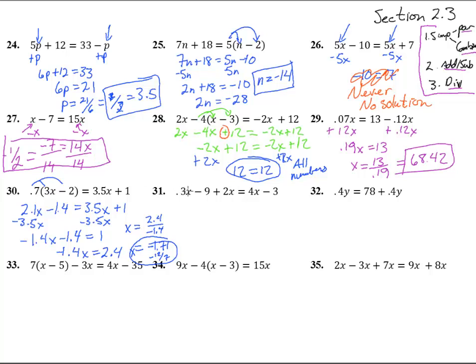Number 31. No parentheses to get rid of, so we just need to worry about combining them together. On this side we have a 0.3 and a 2, so that's 2.3x minus 9 equals 4x minus 3. Then if we subtract this 2.3x, we now have negative 9 equals 1.7x minus 3. Add 3 over here and we get negative 6 equals 1.7x. Divide by 1.7, and we get x equals negative 3.53.